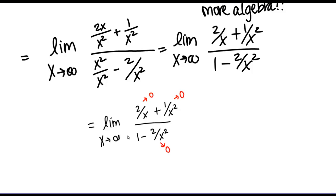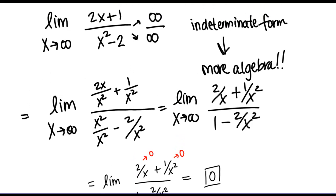Now this constant term 1 — as x goes to infinity, 1 just stays 1. So I can see what each of my terms are going to individually, and that will tell me what's happening to this limit overall. The numerator is going to 0 and the denominator is going to 1. So 0 over 1 is 0. That tells me this limit is 0 overall. We've just determined that the limit as x goes to infinity of our function is 0.